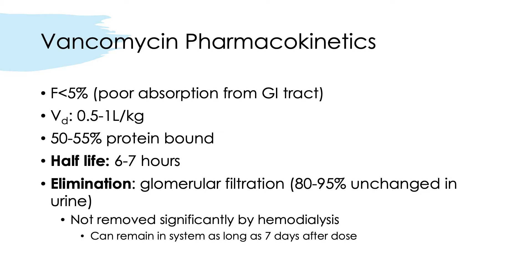Vancomycin's pharmacokinetic parameters: its bioavailability, like aminoglycosides, is very low with poor GI absorption. However, this is beneficial in Clostridioides difficile infections, where PO vancomycin can be used since C. diff stays in the GI tract — but it cannot treat systemic infections, which require IV dosing. IM doses are not used due to pain. Volume of distribution is 0.5 to 1 L/kg; it diffuses well into pleural, pericardial, synovial, and ascitic fluids, though CNS penetration is unreliable except in acute meningitis. It is 50–55% protein bound with a half-life of 6–7 hours. It is primarily eliminated through glomerular filtration and is not removed by hemodialysis, potentially remaining in the system up to 7 days after administration.